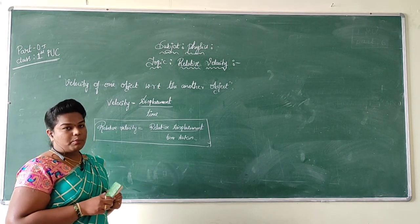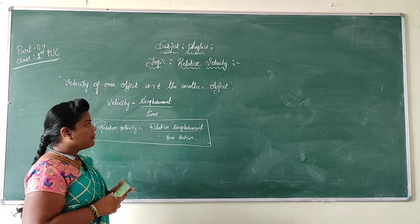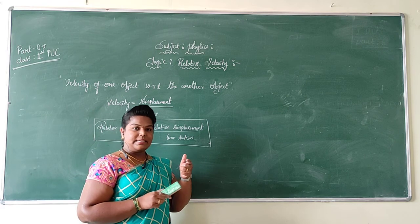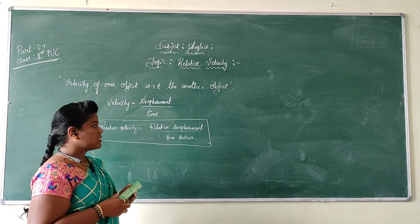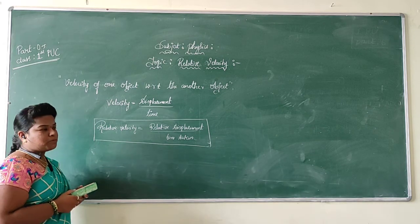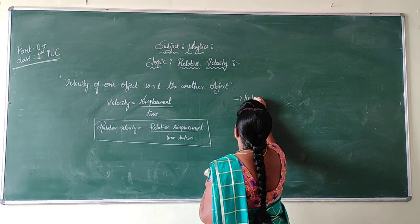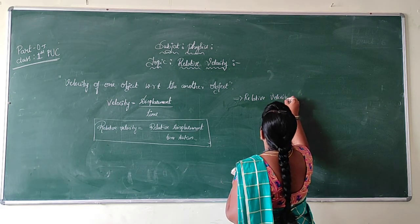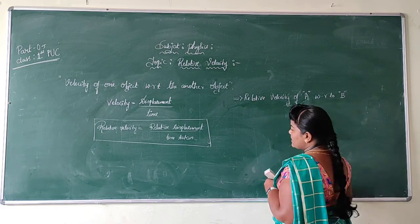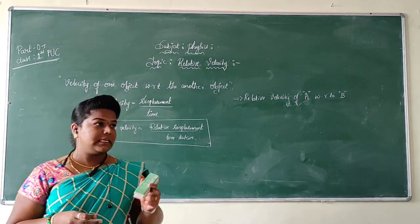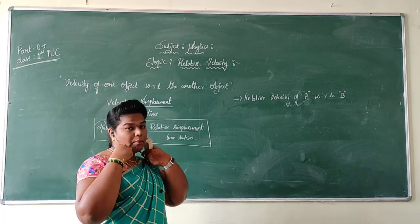First, we should know how to represent the relative velocity. Assume we have two different objects, A and B. Object A is moving with some velocity VA, and object B is moving with some velocity VB. The relative velocity of object A with respect to object B means we are comparing the velocity of object A with respect to the velocity of object B.